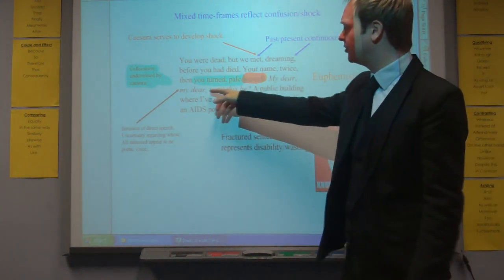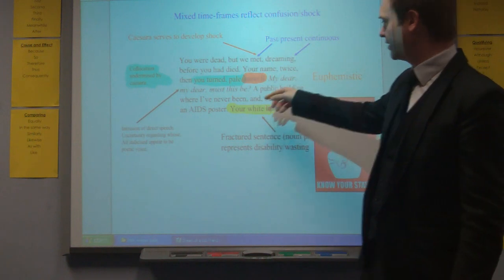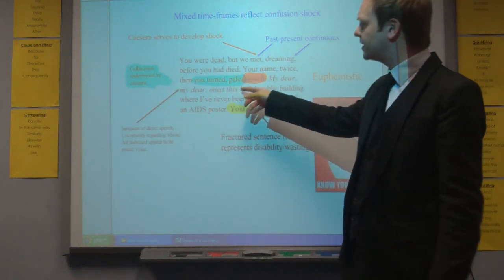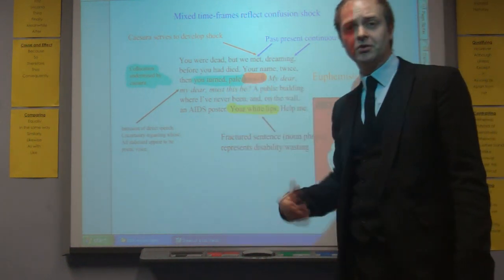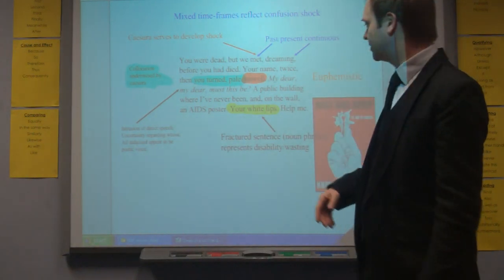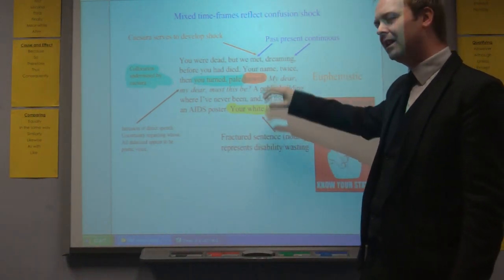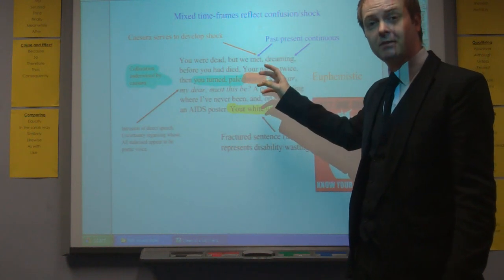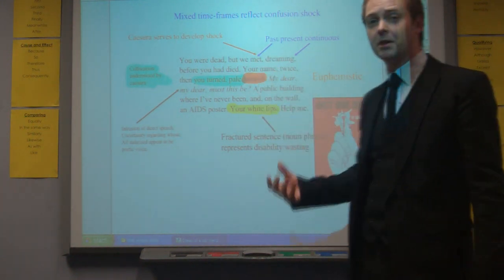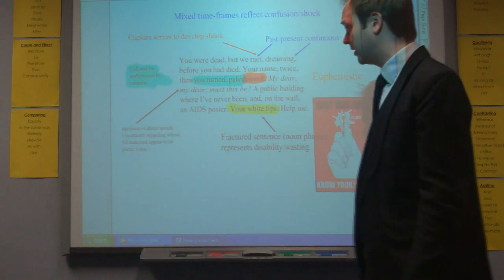Throughout the poem we get an intrusion of direct speech. My dear, my dear, must this be? Now initially we're uncertain whose voice this is. But given that we have help me here and some of the other references to direct speech in the poem, it seems as if it's going to be the poetic voice's language that's running through.